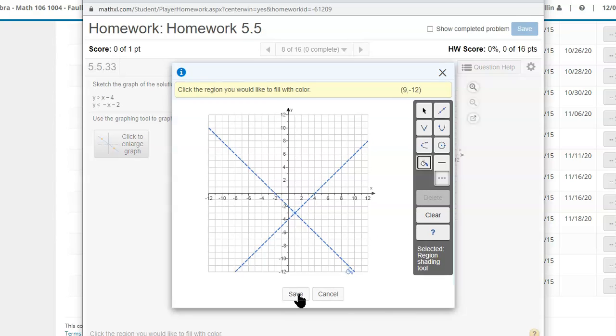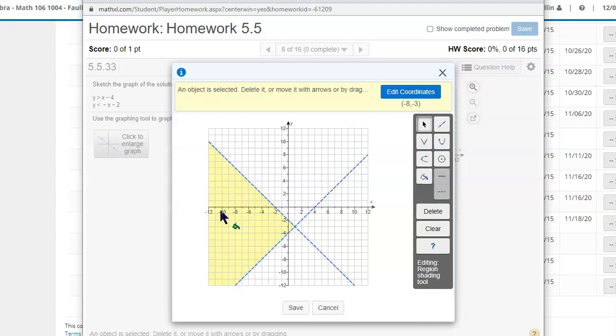You want the paint bucket tool, and then you click in the region where you want it to fill that color in. We want to fill in this region over here to the left. I click anywhere in this region, it'll apply a shading into that entire region. That's how you color in the correct area for the solution set to that system of inequalities. Any point in this region satisfies this system of inequalities.